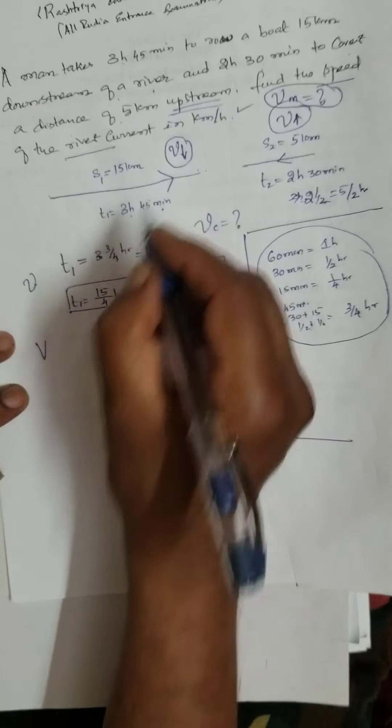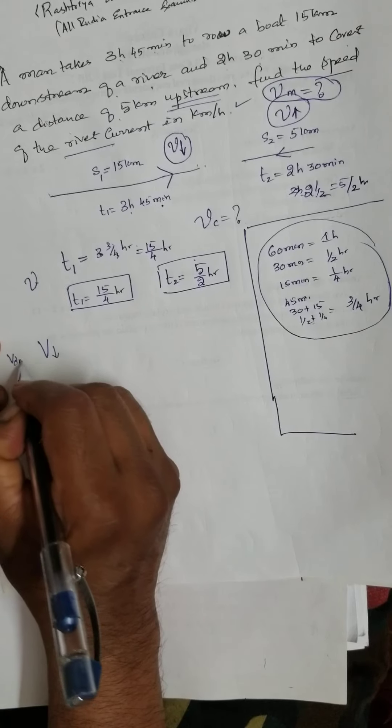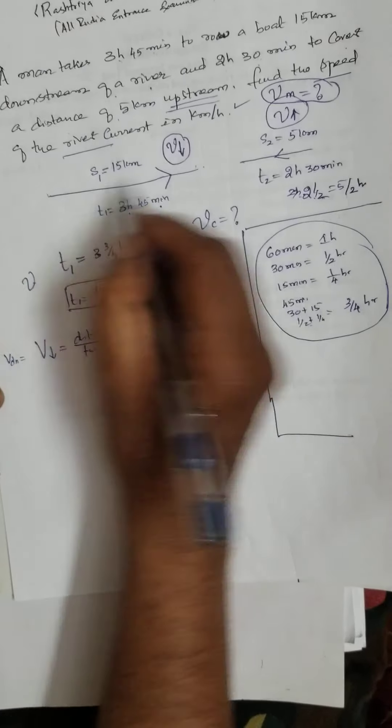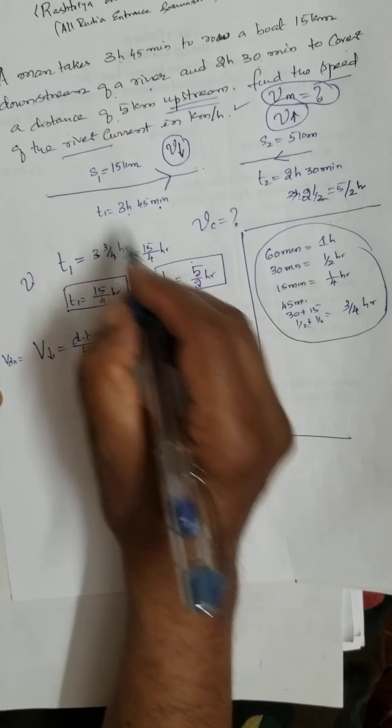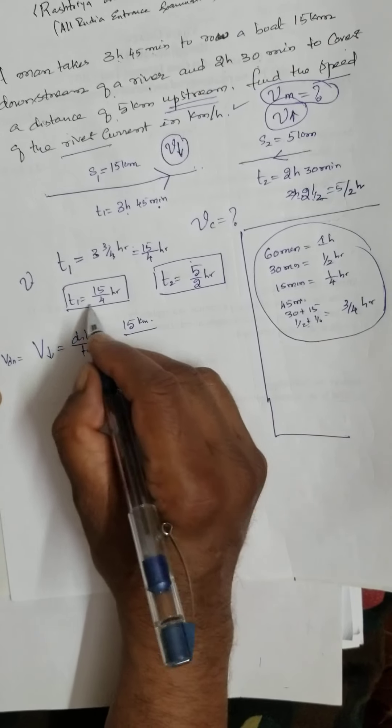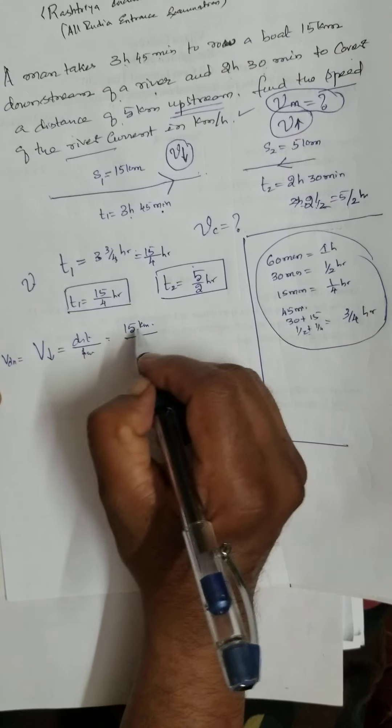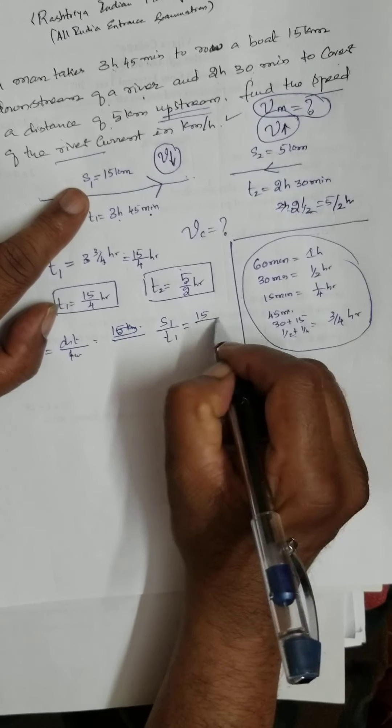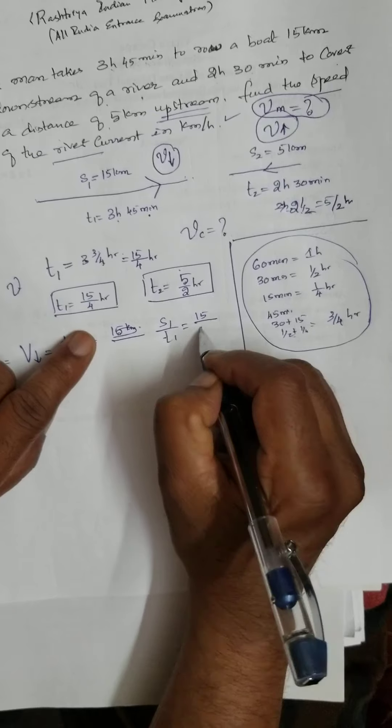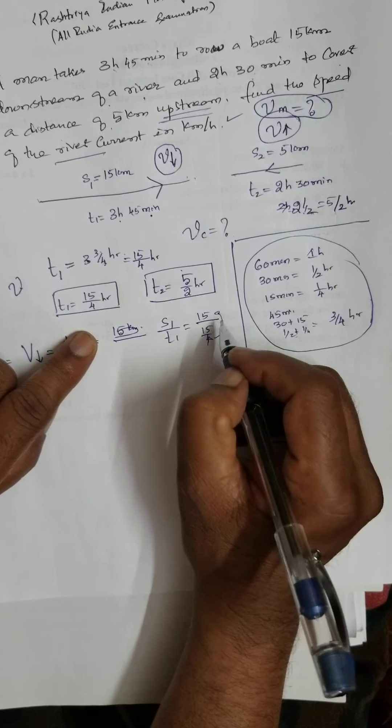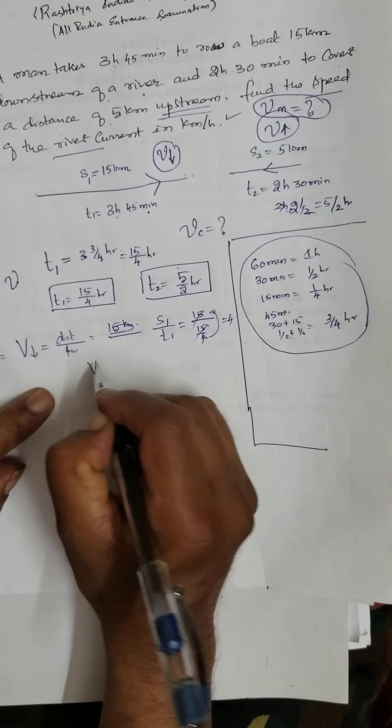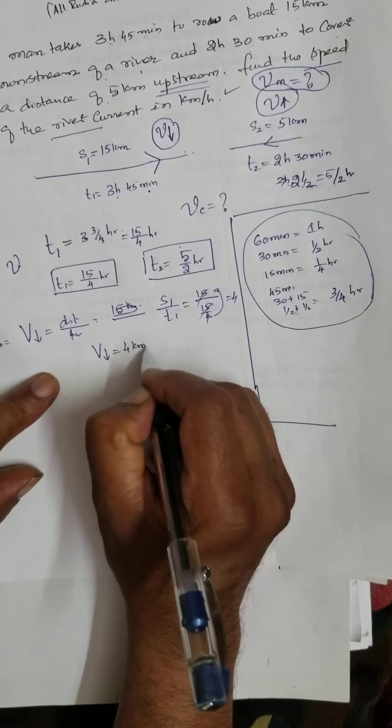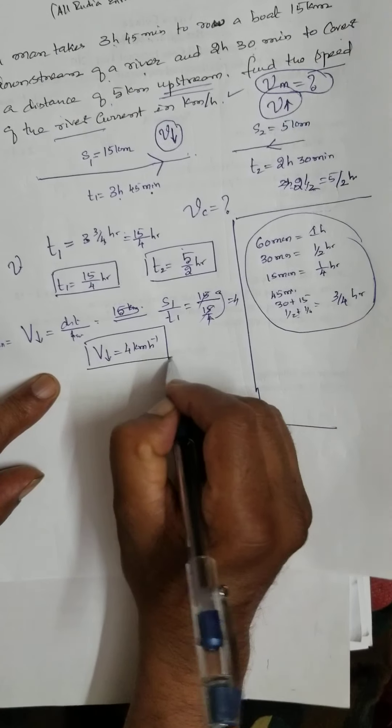What is velocity of downstream? Velocity of downstream is equal to distance by time, is it not? What? What is the distance? 15 kilometer. What is the time? Here. This is distance. S1, T1. S1 is at 15. That by time is 15 by 4. This goes up. This one, this one can cancel. 4. Therefore, V downstream is equal to 4 kilometer per hour. Downstream is equal to 4 kilometer per hour.